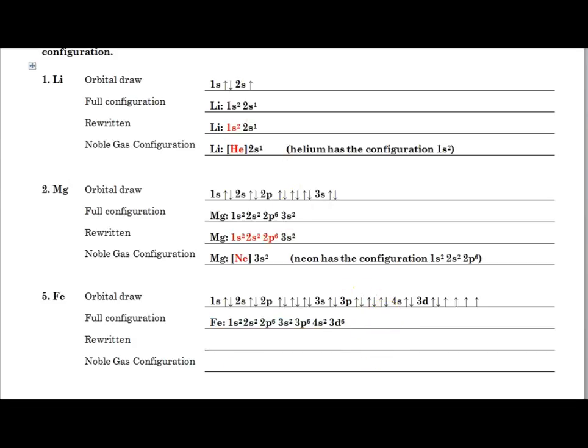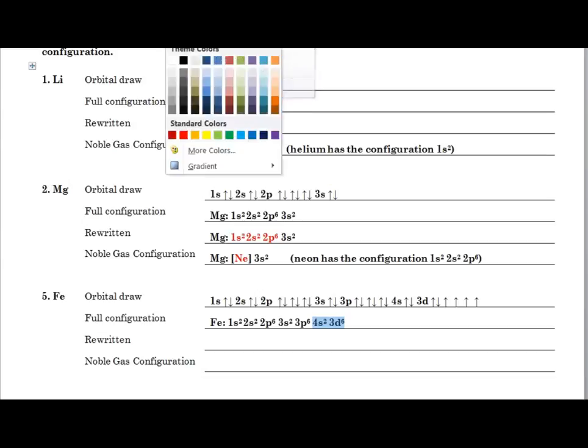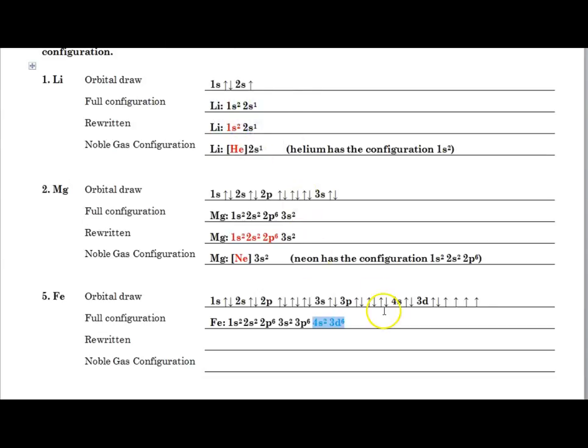And here, it's nice to notice 1s2, 2s2, 2p6, 3s2, 3p6, 4s2, 3d6. Now right here, I like to notice, and I'm going to put this in a different color because I can notice that those are not in numerical order.